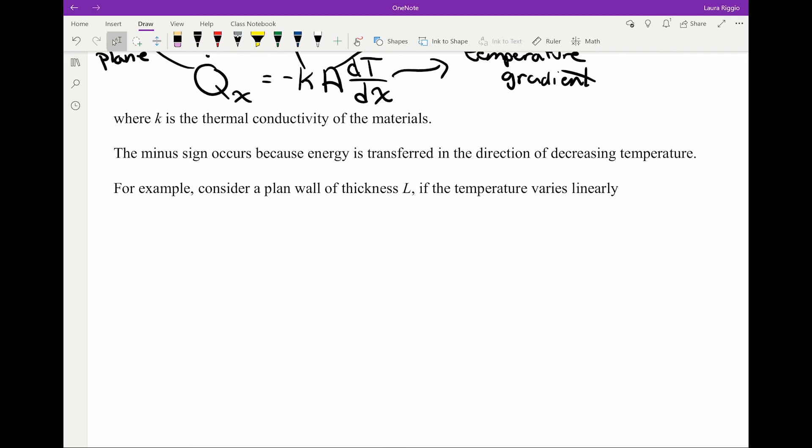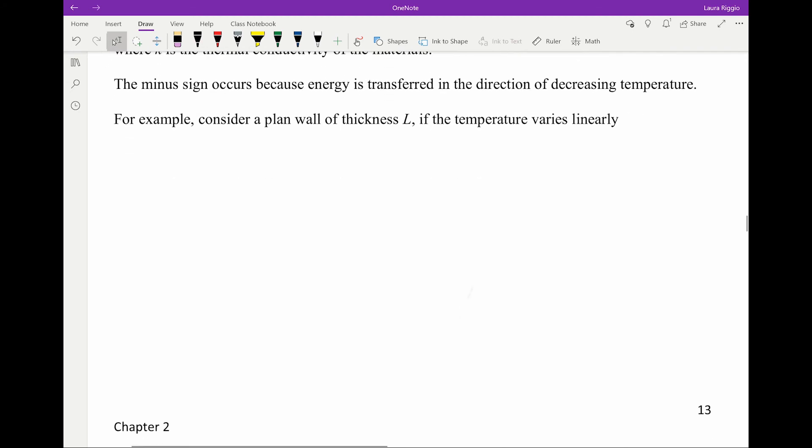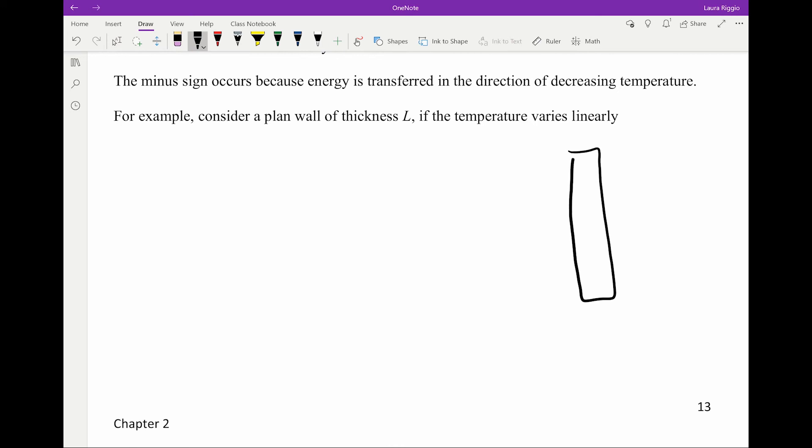The minus sign is because energy is transferred in the direction of decreasing temperature. If we consider a plane wall with temperature T1 on the inside and a lower temperature T2 on the outside, and that temperature varies linearly, and my wall has a thickness L, then dT/dx is approximately T2 minus T1 over L. The heat transfer Q dot x is going to be equal to minus KA times T2 minus T1 over L.